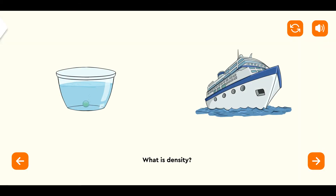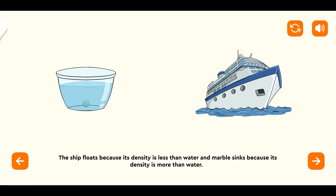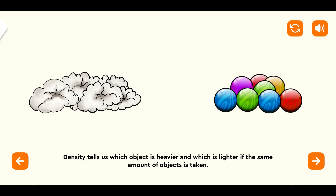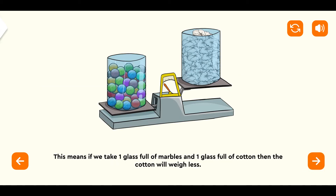What is density? It is something which makes huge ships float on water and small marbles sink in water. The ship floats because its density is less than water, and marble sinks because its density is more than water. Density tells us which object is heavier and which is lighter if the same amount of objects are taken. For example, cotton is less dense than marbles. This means if we take one glass full of marbles and the same glass full of cotton, then the cotton will weigh less.